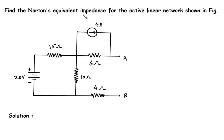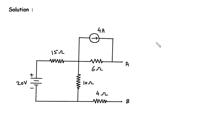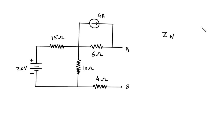Find the Norton's equivalent impedance for the active linear network shown in the figure. We have to find Zn for this active linear network.